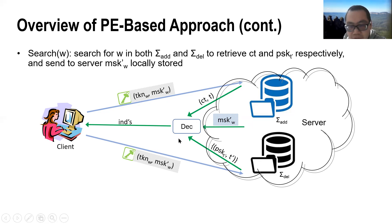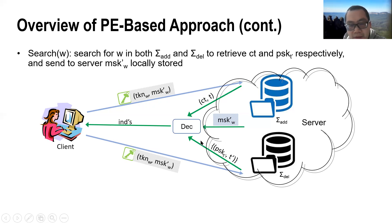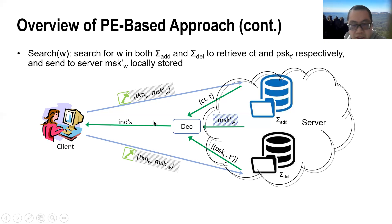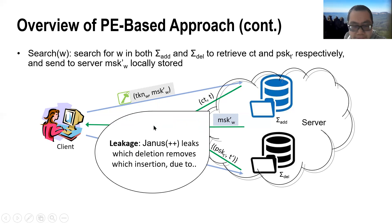This is because the server can keep track of the deletions through the outsourced punctured key shares. Therefore, this approach can only achieve Type 3 backward privacy.